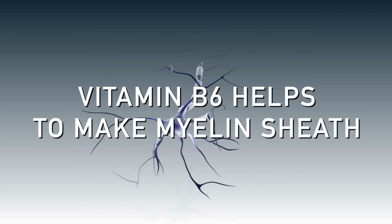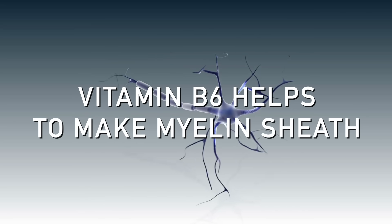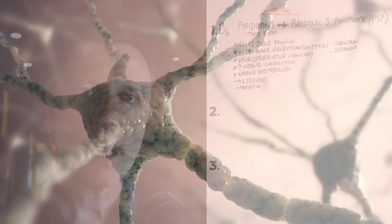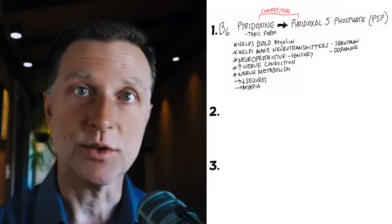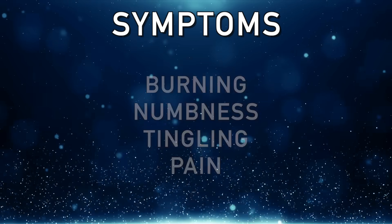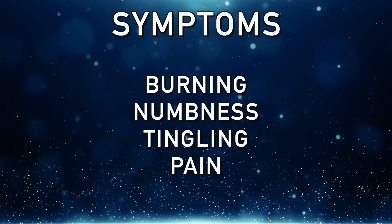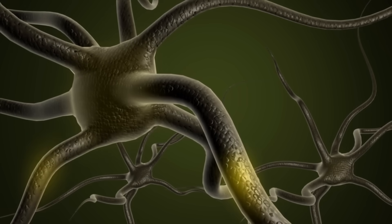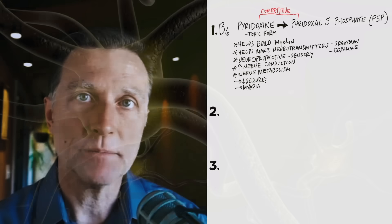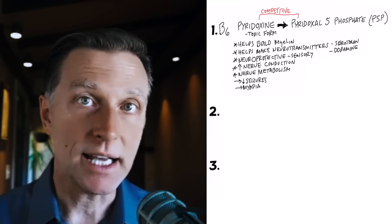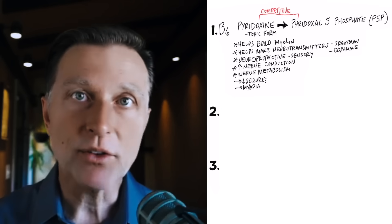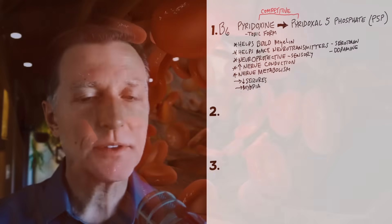But today we're going to focus more on the nerve problems that can occur. Now B6 helps to make myelin sheath. That's one thing it does. Myelin sheath is the coating around the nerve. And when you lose that coating, the nerve stops working. You start having symptoms like burning, numbness, tingling, pain, because that nerve keeps everything going, keeps the nerves flowing. And so the protein that builds myelin, which is a type of fat insulation, is dependent on B6, as well as B6 helps produce neurotransmitters, those nerve communications that travel through the nervous system.